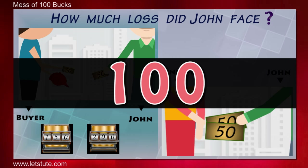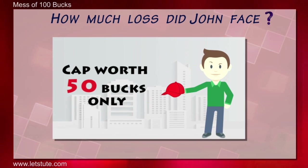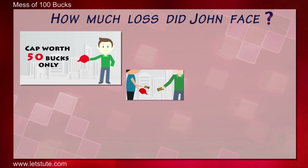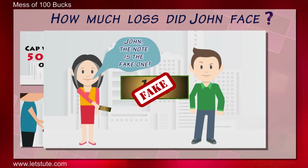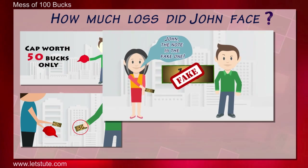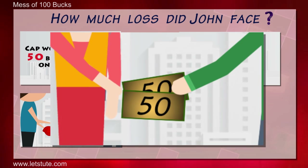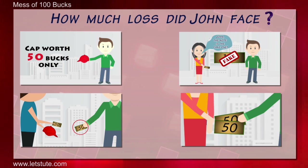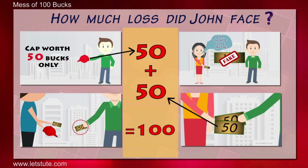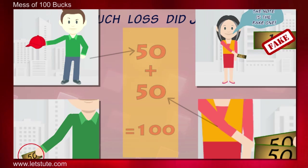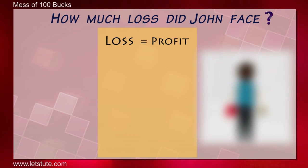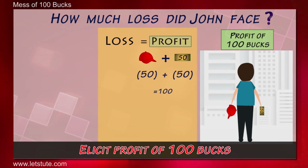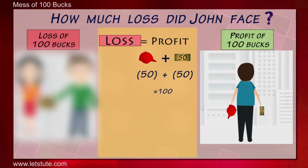But what if I say it's a loss of 100 only? Let me justify. John just had a cap worth 50 bucks and nothing else. When he sold the cap, he was left with 50 bucks in his pocket instead of that cap. When his neighbor Jennifer asked for the real note, John had to arrange only 50 bucks, as he already had 50 from the cap he sold. So actually, he lost his cap worth 50 bucks and 50 which he arranged. Let's cross check this answer — one's total loss must be equal to another's total profit. Here the buyer is making an illicit profit of 100 bucks, which must be equal to the total loss of John.